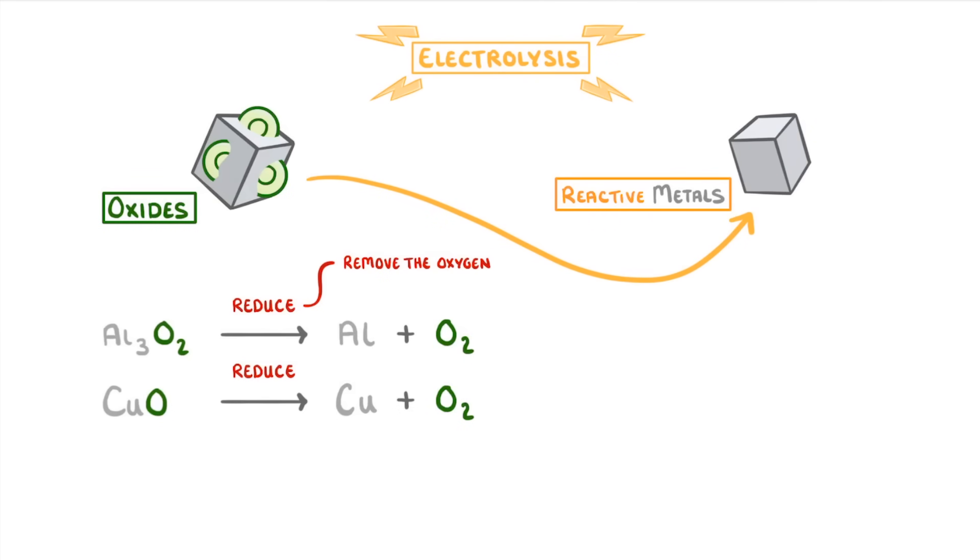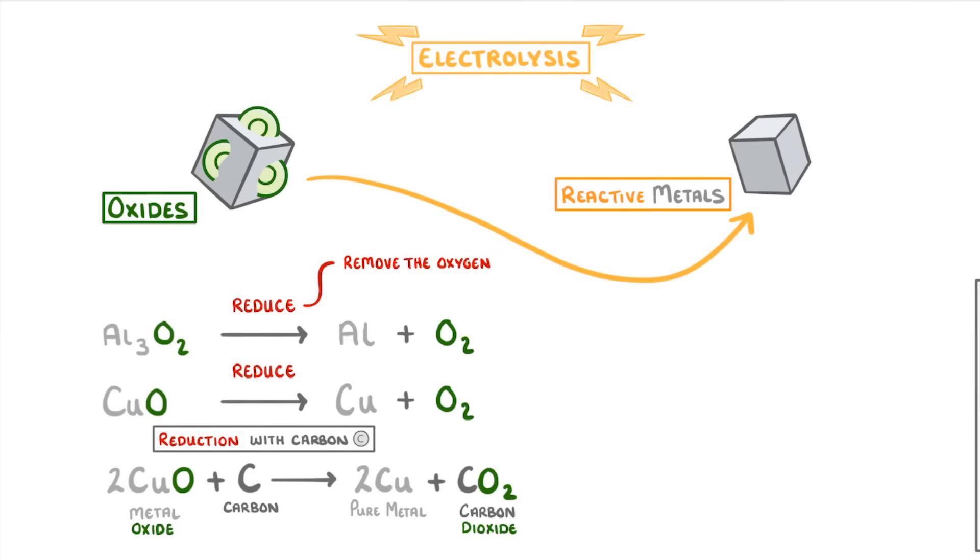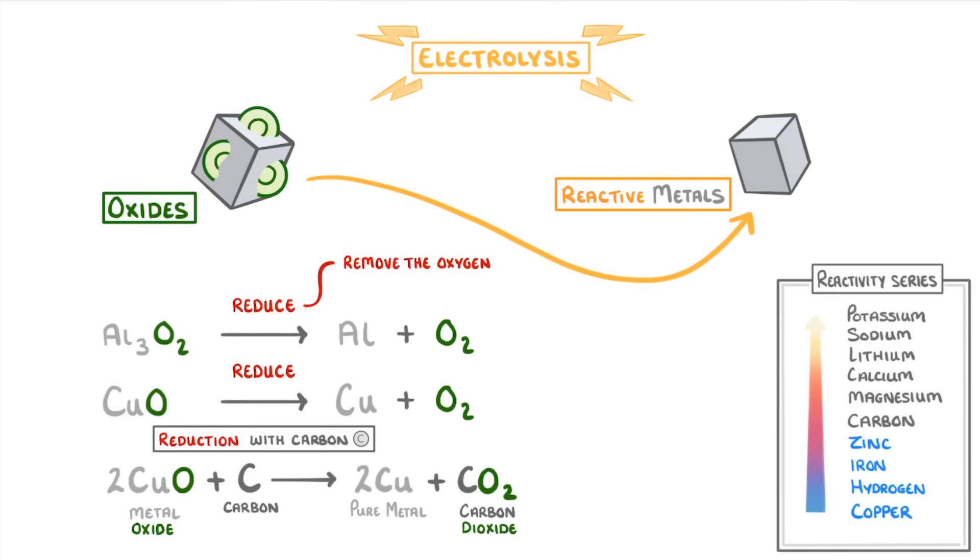Now the cheap and easy way to do this is by reduction with carbon, where the carbon atoms displace the metal in the metal oxide to form pure metal and carbon dioxide. However, this only works for metals that are less reactive than carbon, like zinc, iron and copper.